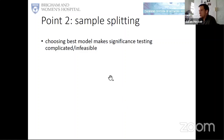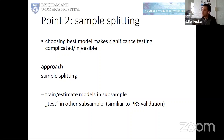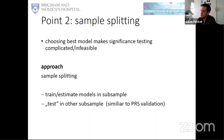One approach in the field is sample splitting: we split the dataset into multiple parts, estimate and train models in the first subsample, and after selecting the best model, go to the second part of the data to test for interactions. Because this is independent data, we get a valid p-value if we can come up with a method to test for interaction in the second data subset.